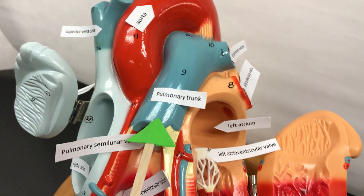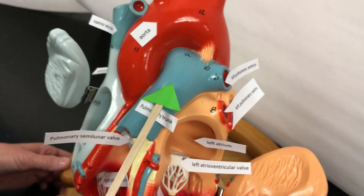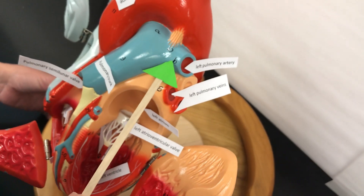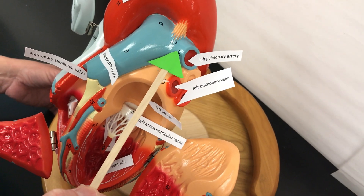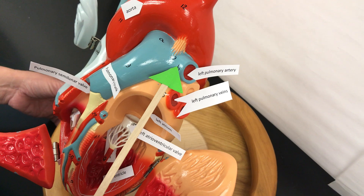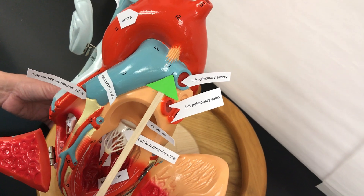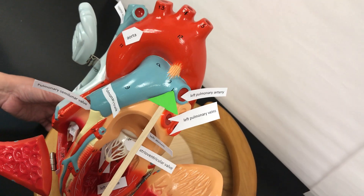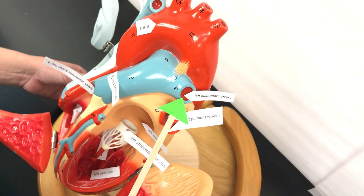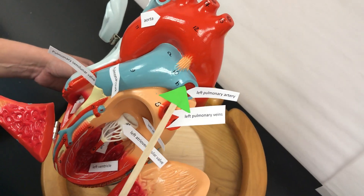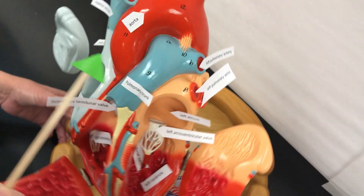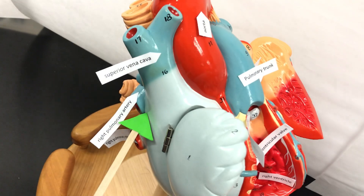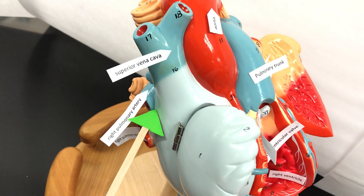The pulmonary trunk is going to divide into the pulmonary arteries. Pulmonary tells us we're going to the lungs, and artery tells us we're going away from the heart. We still have deoxygenated blood here. We have a left pulmonary artery and also a right pulmonary artery, because you have a right and a left lung.